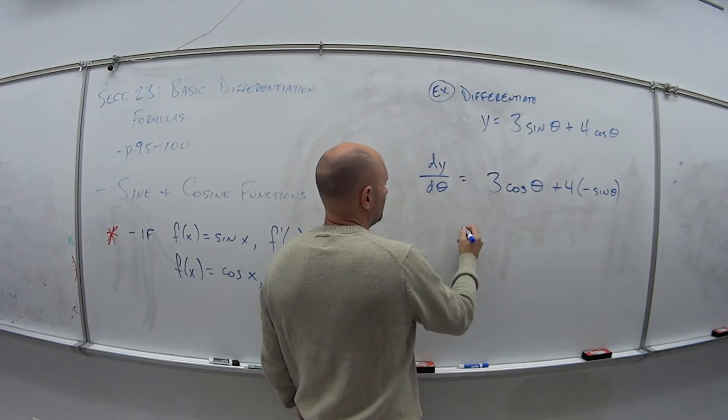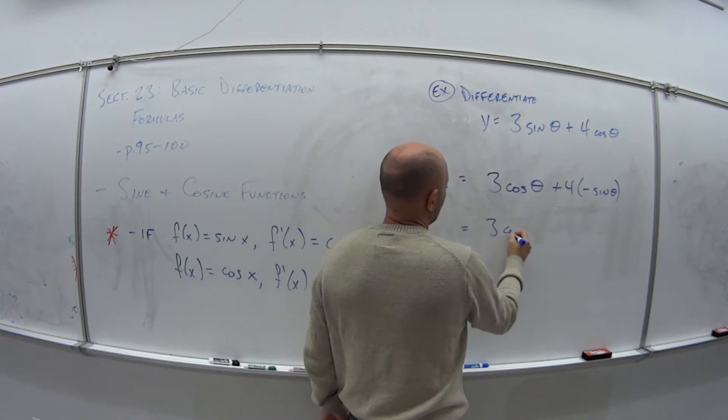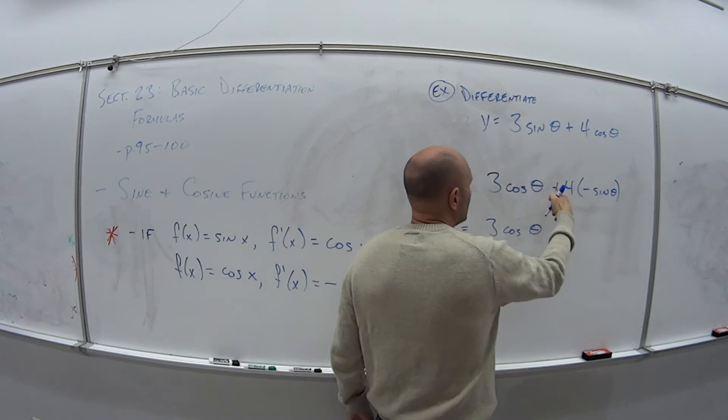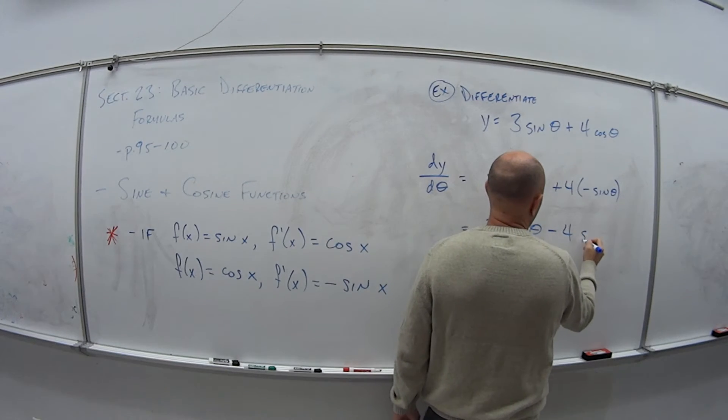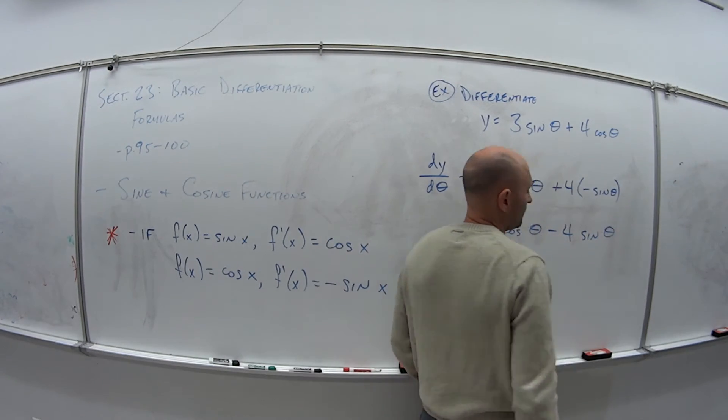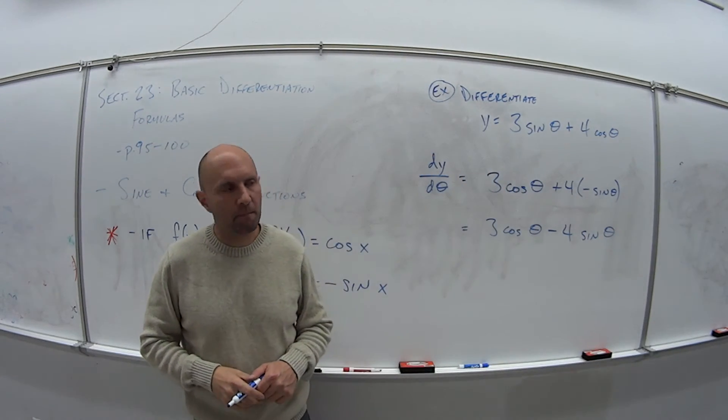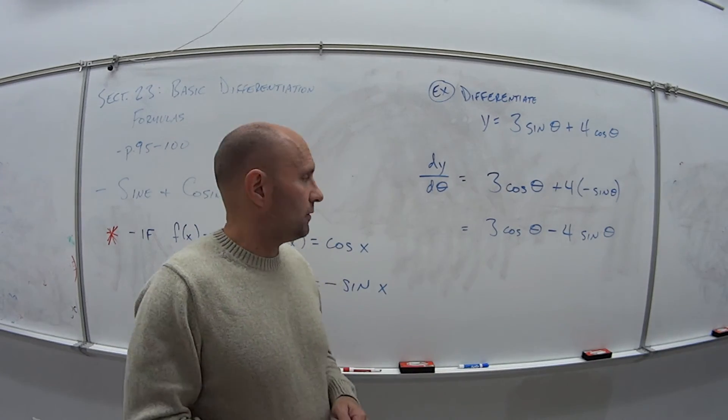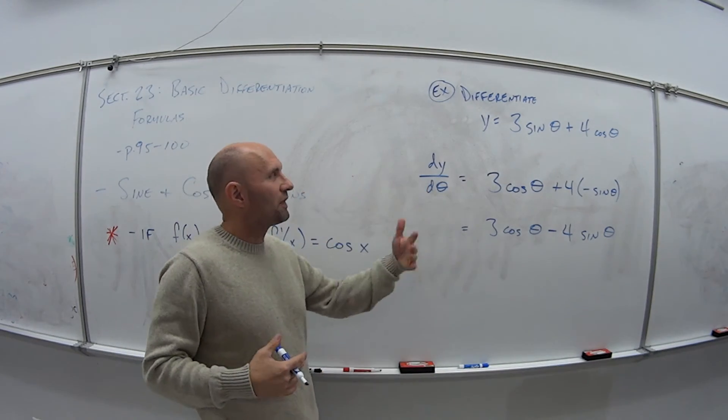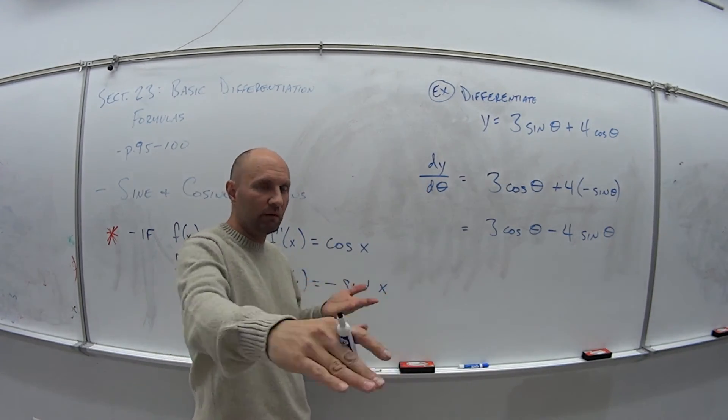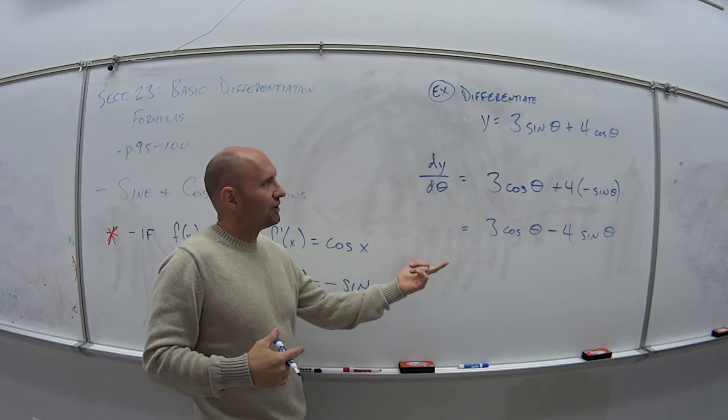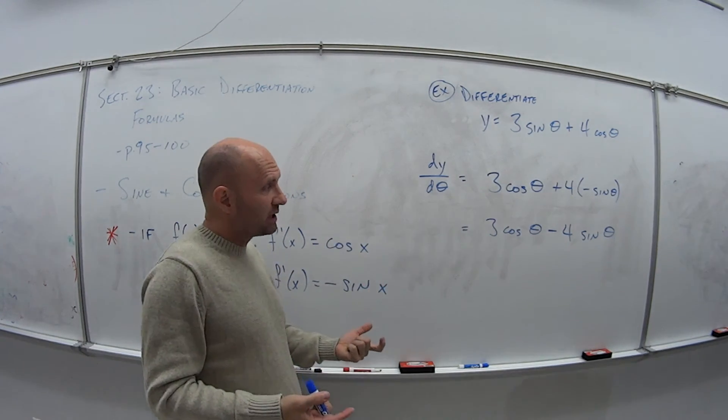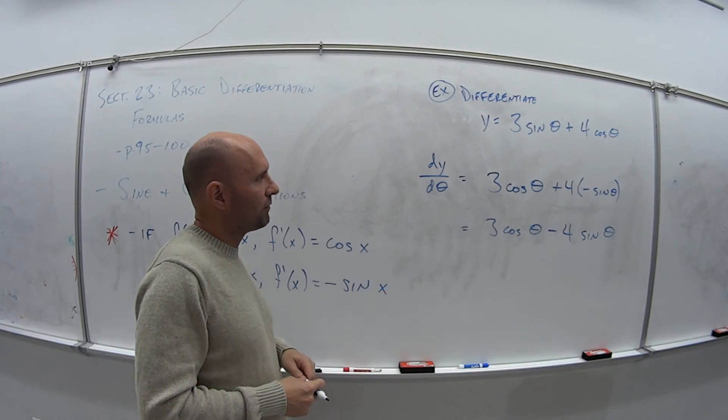So if I simplify this, this is 3 cosine of theta plus minus means I have minus 4 sine of theta. And that's it. So same sort of methodology in finding the derivative of this function. We just take the derivative of the individual trig pieces and then simplify it.